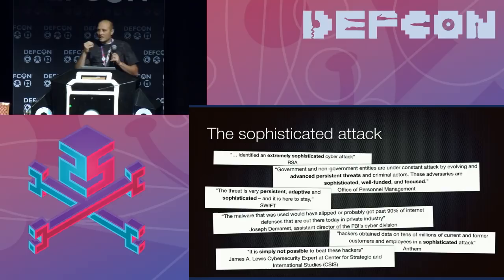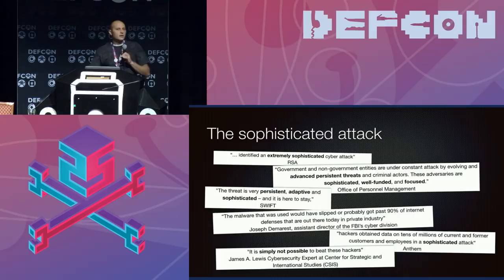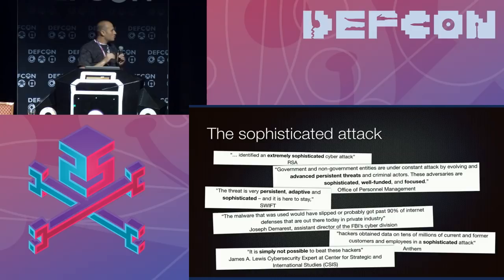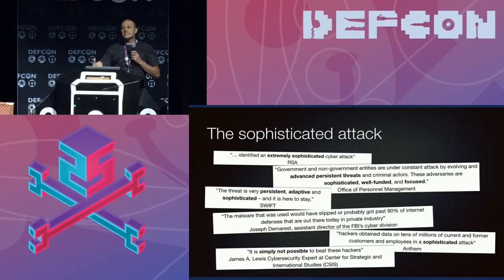If I picture that conversation with the C-levels: 'Sir, we've been hacked.' 'How did they get in?' 'They were sophisticated.' 'How do you know?' 'Well, they were wearing a monocle.' What does 'sophisticated' even mean in this context? I think they're trying to convey that the attacker was so far beyond what defenders can do that we just can't win. So I set out to look at the tools these sophisticated actors are using and see if they're vulnerable to attacks — if somebody were to attack them back.